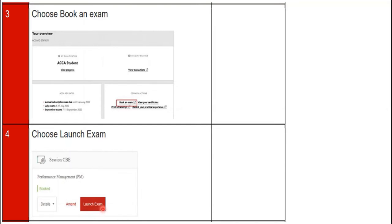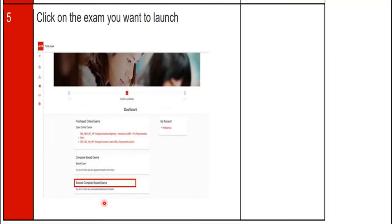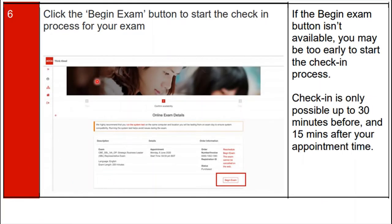The next step is to click the 'Launch Exam' button as shown on the screen. Step 5: click on the exam you want to launch — select 'Book Computer Based Exams'. After clicking this button, you will be directed to the list of exams you have booked for the ACCA remote exam.